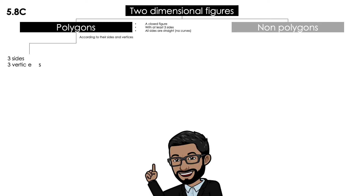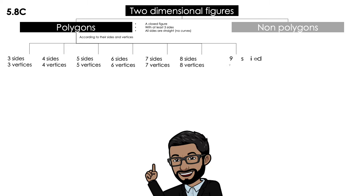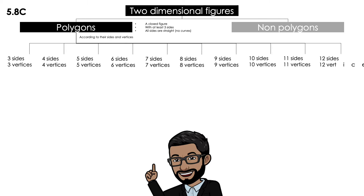We're going to start all the way from three sides, all the way to 4, 5, 6, 7, 8, 9, 10, 11, up to 12 in fifth grade. That doesn't mean that there are no polygons of 15 sides or 20 sides — of course there are. However, in fifth grade we are only going to talk about up to 12 sides and vertices polygons. So now let's get started.